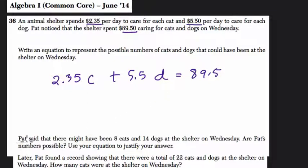On Wednesday, then Pat said there might have been 8 cats and 14 dogs at the shelter. Are these numbers possible? Use your equation to justify your answer.